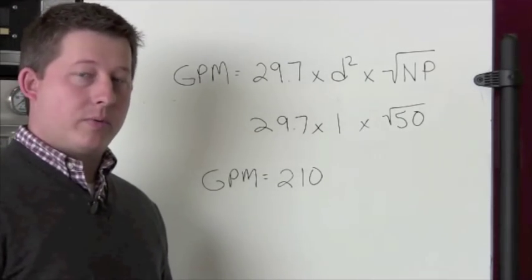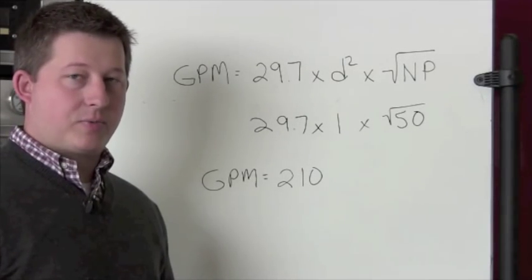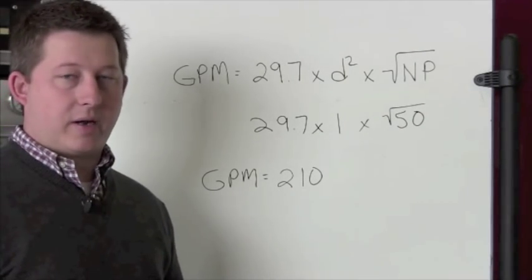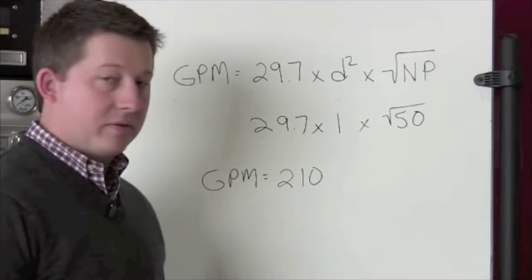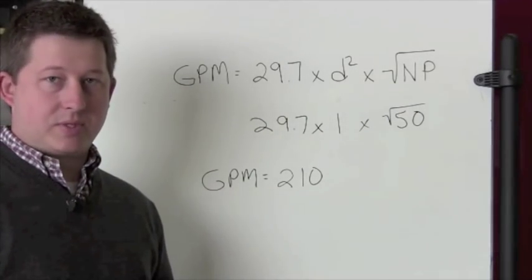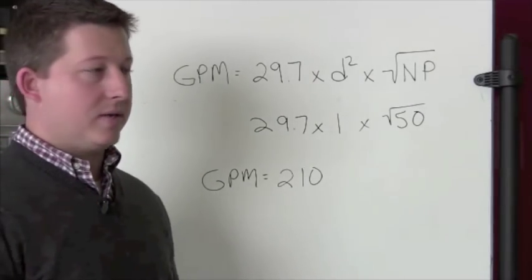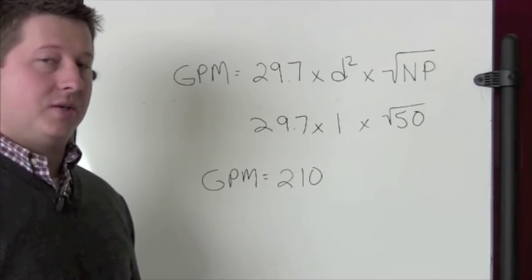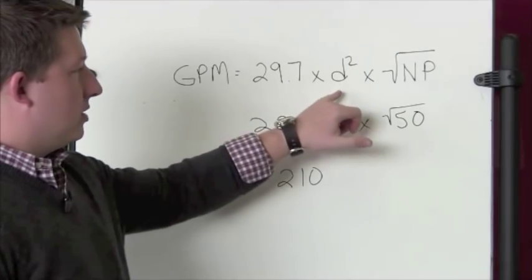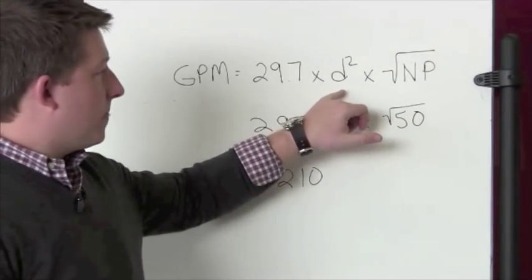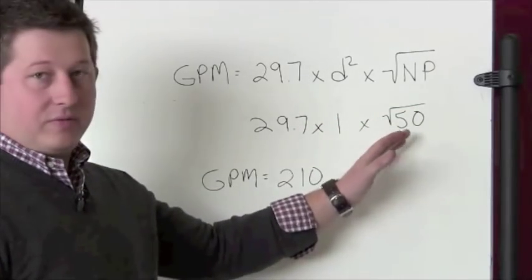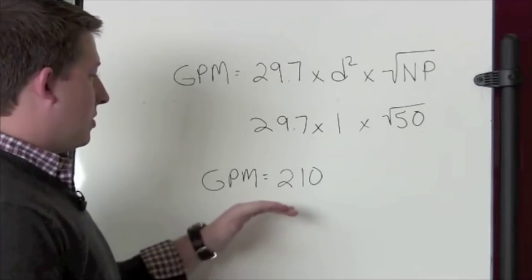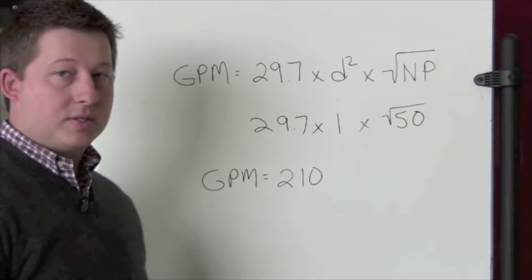I'm going to do the exact same formula, but instead of using 80 psi for nozzle pressure, I'm going to change it to 50 psi. So we're saying we're using a one inch nozzle on a handline, basically like a high rise pack. Using it as a handline instead of a master stream, the only thing we change is the nozzle pressure. So it's 29.7 times diameter squared — one inch tip — times the square root of 50. Working the problem out, 29.7 times one times the square root of 50 gives us 210 gallons per minute.